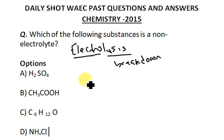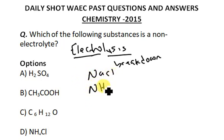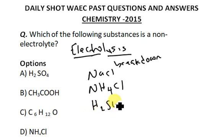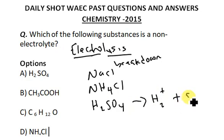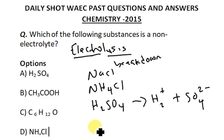Examples of electrolytes include NaCl, NH4Cl, KCl, and others. We also have one of our options here: H2SO4, which when it breaks down gives H2+ and SO4 2−. That makes it an electrolyte.